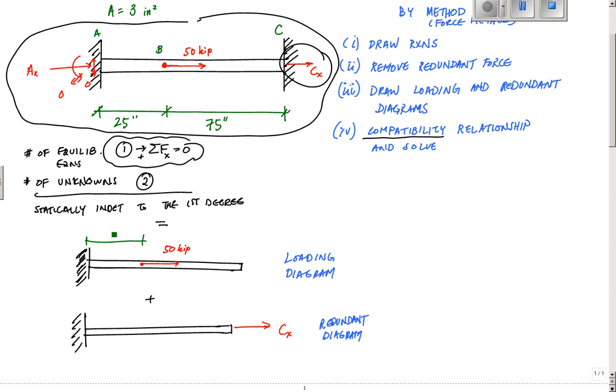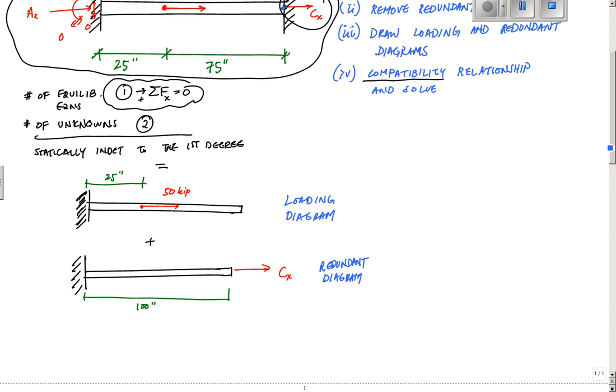So here I have, this is 25 inches and this is 100 inches. And the thing I want to relate here is that I know that point C, in terms of deformation, point C should not move. So the total deformation at point C should equal zero. So I need to come up with a compatibility relationship for that. If I apply a 50 kip load here, I know that I'm going to have some deformation here. And I will call this, with my loading diagram, I'm going to call this deformation delta C zero. And then with this load right here, I'm going to have some deformation right here. And I'm going to call that delta C one.